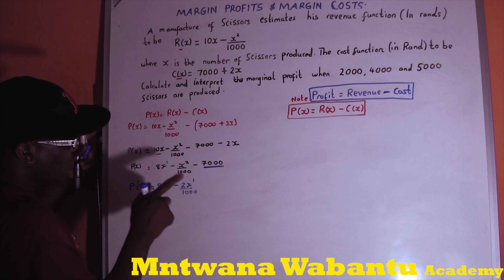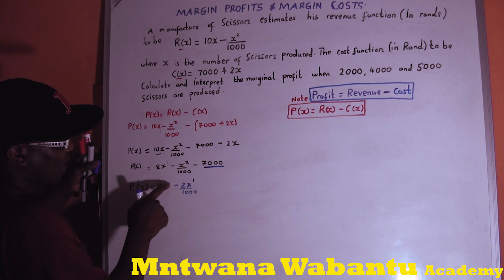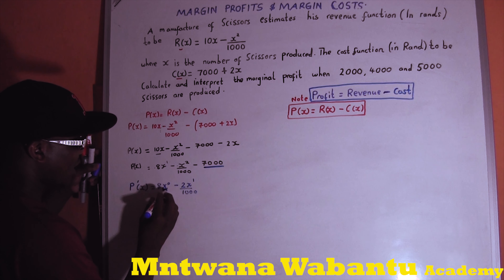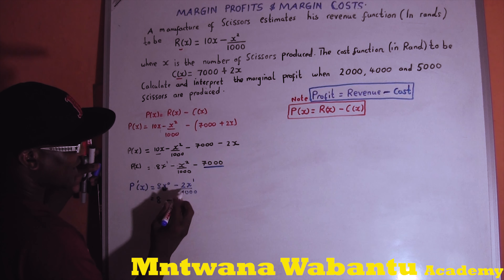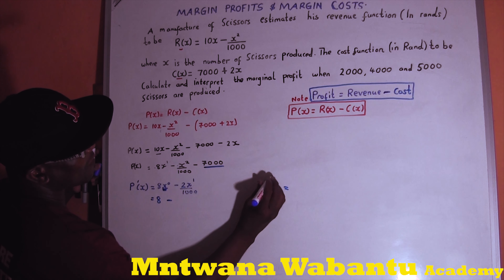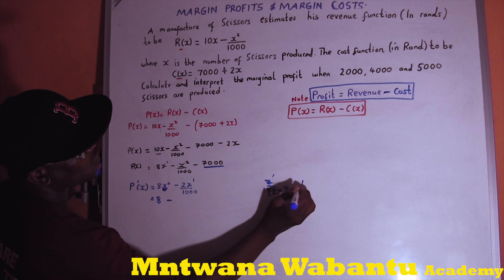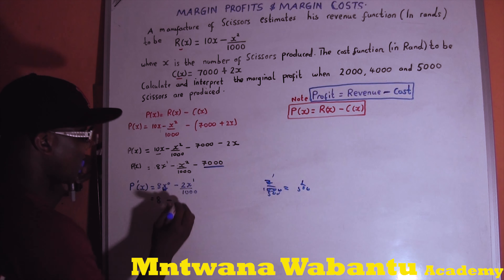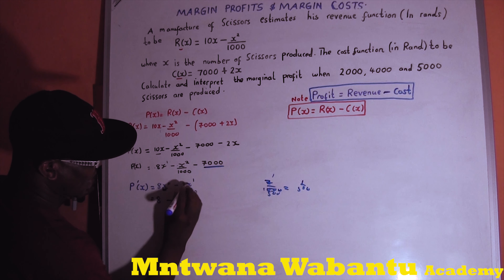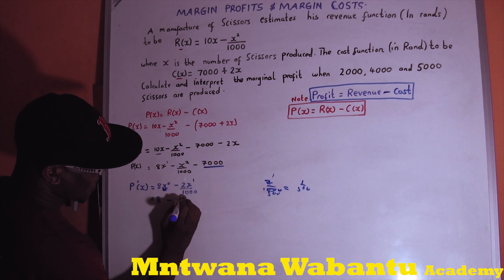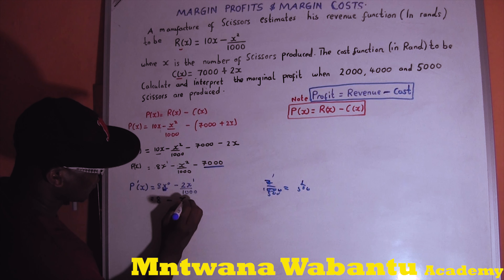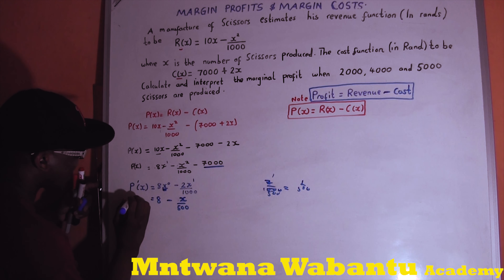Any number to the power zero equals 1, so that term just gives 10. Then for the x-squared over 1000 term: bring the 2 down, giving 2x over 1000, which simplifies to x over 500. The constant 7000 disappears when differentiated. So the marginal profit function is 10 minus x over 500.